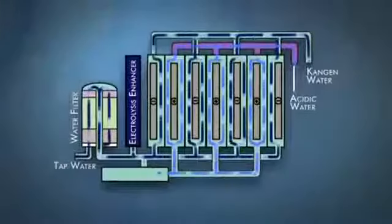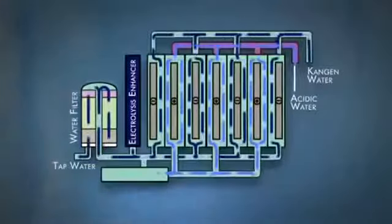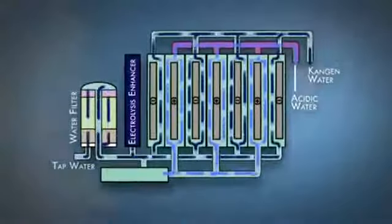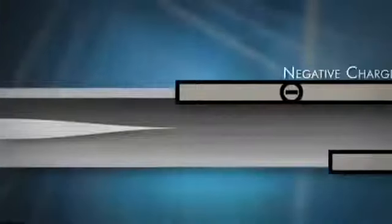The water passes over the plates. The minerals in the water are separated into two streams of water, one alkaline and one acidic.